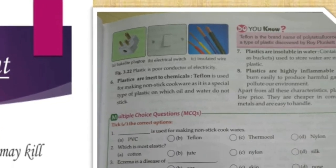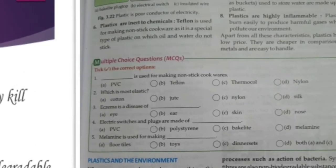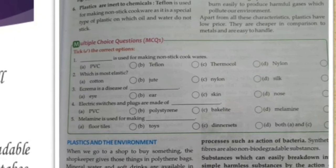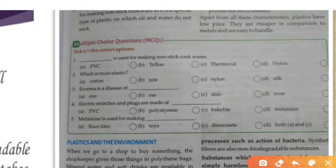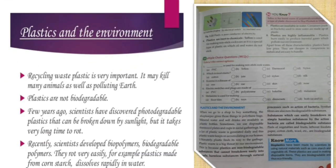Here are some important practice questions: Which plastic is used as a non-stick coating? Which one is most elastic? What is eczema? Eczema is a skin disease — a kind of irritation on your skin. What material is the electric switch made from? These are very simple questions you can answer.